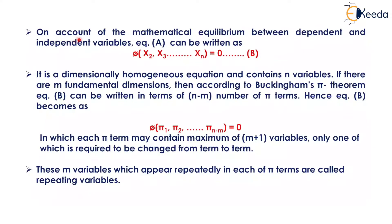On account of the mathematical equilibrium between dependent and independent variables, equation A can be written as φ(x₂, x₃ up to xₙ) equals 0, that is equation B.